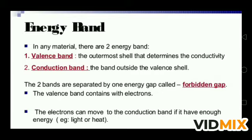In any material there are two types of energy bands: one is the valence band and the second one is the conduction band. The outermost shell that determines the conductivity is called the valence band. The energy band formed by a series of energy levels containing valence electrons is known as the valence band.